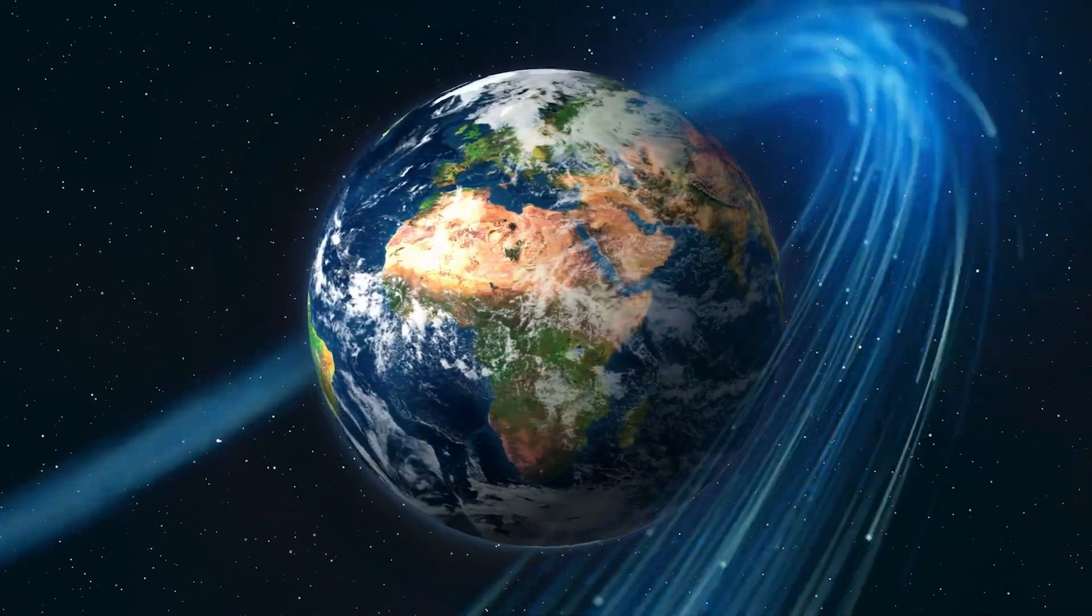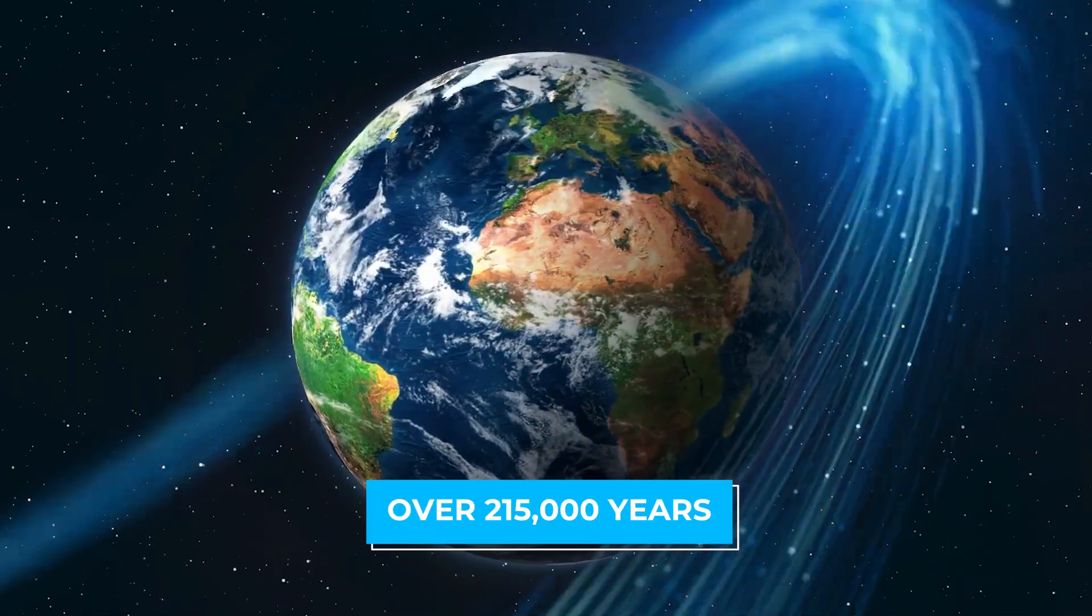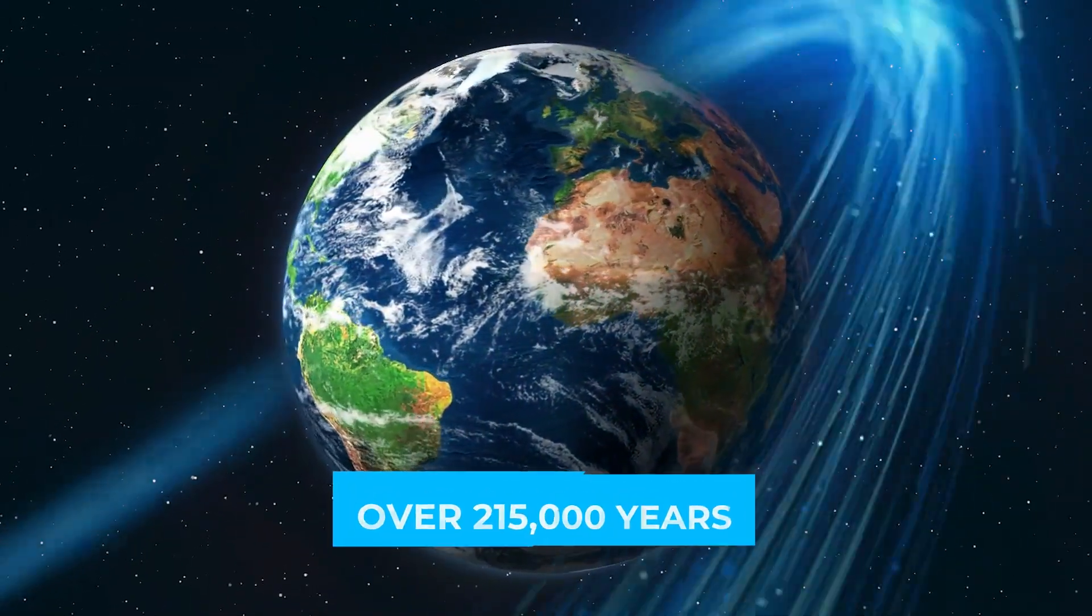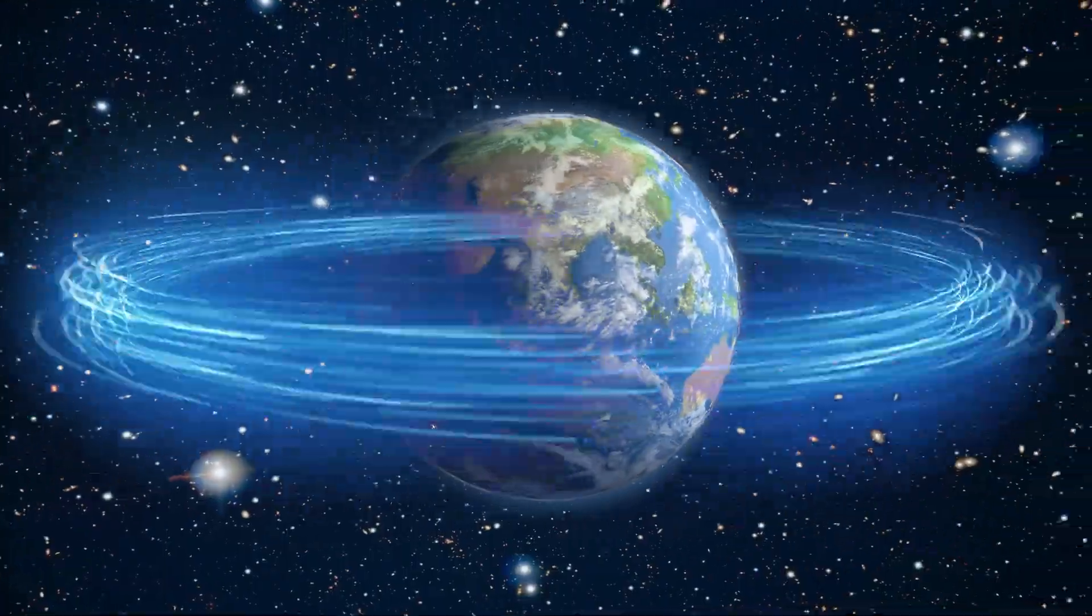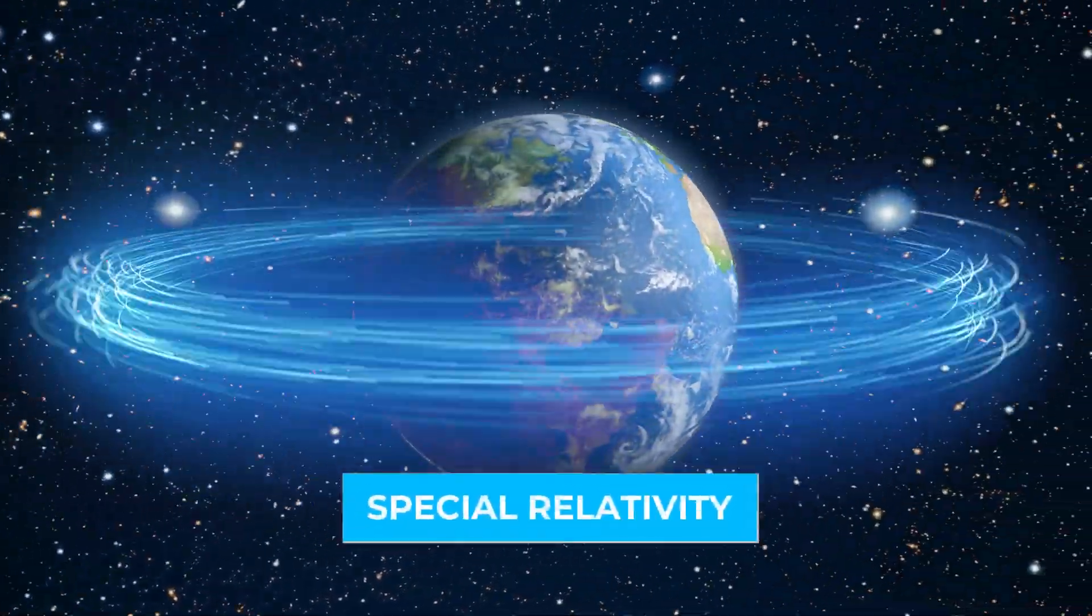If a photon traveled alongside it, it would take over 215,000 years for the photon to be just one centimeter ahead, as seen from Earth. This is because of special rules about how fast things can move, called special relativity.